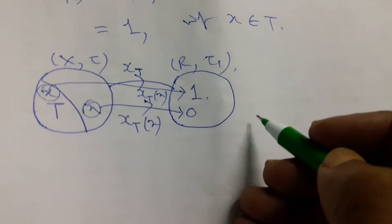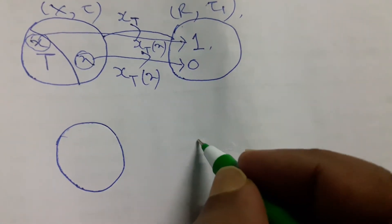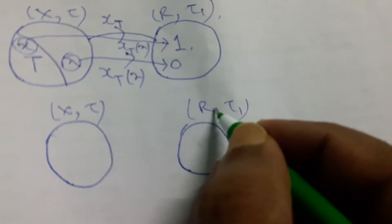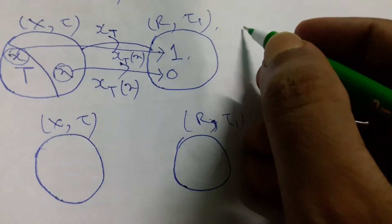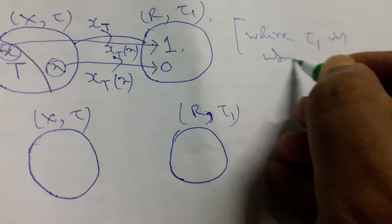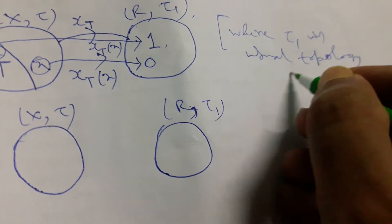Now we find it for the concept of open set. If we draw the same figure repeatedly, otherwise it will be clumsy. This is (X,τ) and this is (R,τ_1) with usual topology, where τ_1 is the usual topology of real numbers.